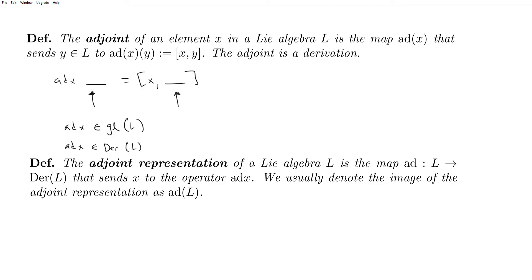And so let's see actually why this is a derivation. And so this follows immediately from the Jacobi identity. And so for the Jacobi identity, we have that for all X, Y, and Z in L, we have that X bracket Y bracket Z plus Y bracket Z bracket X plus Z bracket X bracket Y is equal to zero. We're going to move the right two terms to the right-hand side. And so this becomes X bracket Y bracket Z is equal to minus Y bracket Z bracket X minus Z bracket X bracket Y.